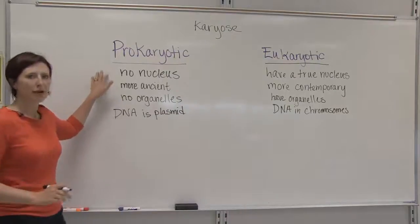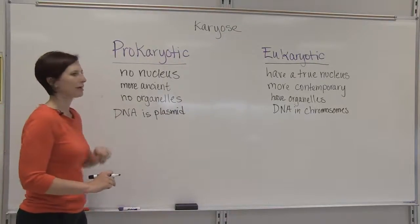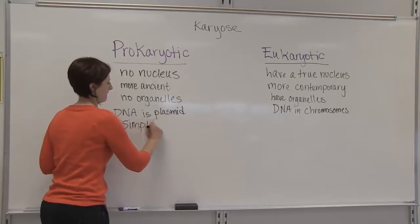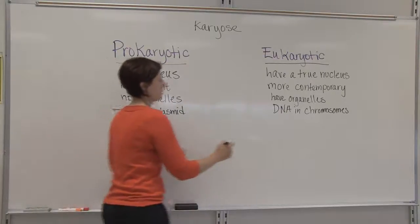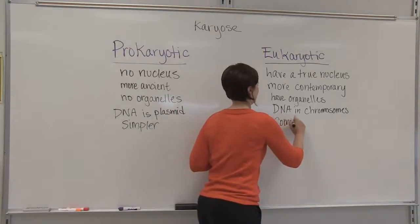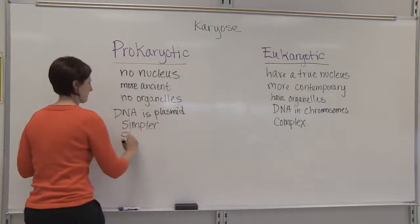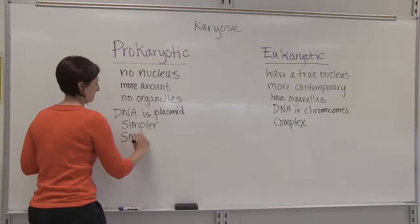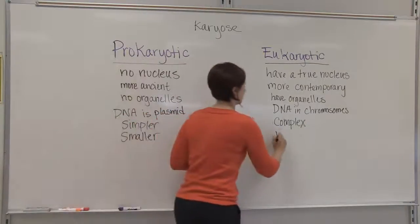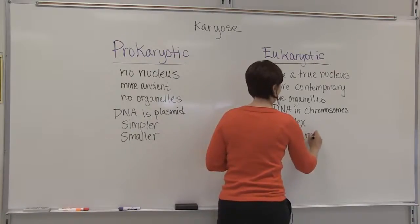Because prokaryotic cells have no nucleus and no organelles, they're often considered simpler than eukaryotic cells, which are more complex, and they're often smaller. On average, eukaryotic cells are about 10 times larger than prokaryotic cells.